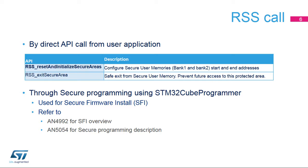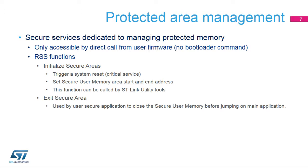RSS services used for Secure Firmware Install or SFI are accessed by the STM32 Cube Programmer Tool. Services called by direct API allow secure area management, including the setting and management of the secure user memory. This memory is for critical user firmware executed in a safe environment. Typical applications include Secure Firmware Update or SFU and Secure Bootloader. For a detailed description, please refer to the STM32H7 Memory Protections training module and Application Note AN4925.